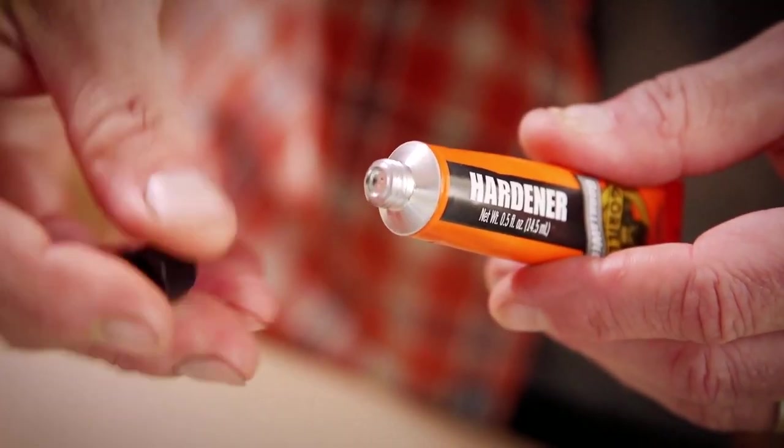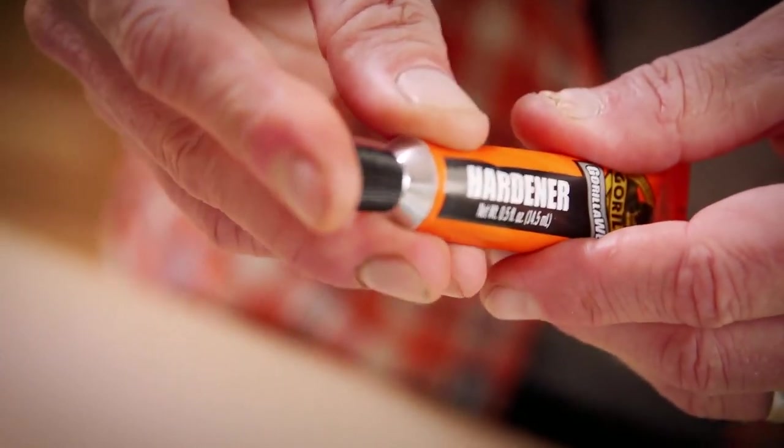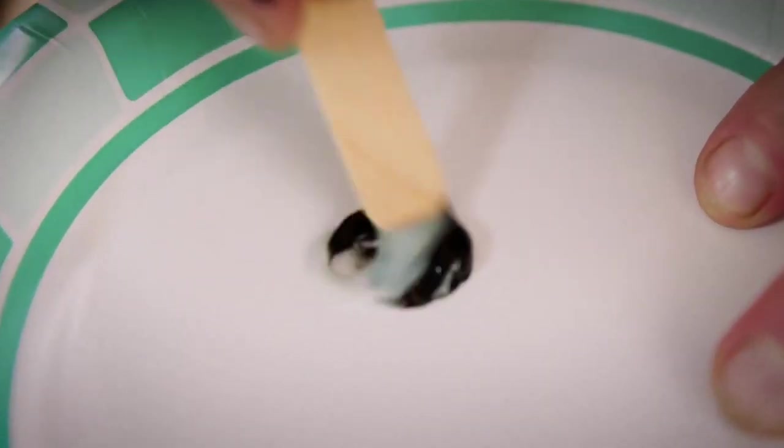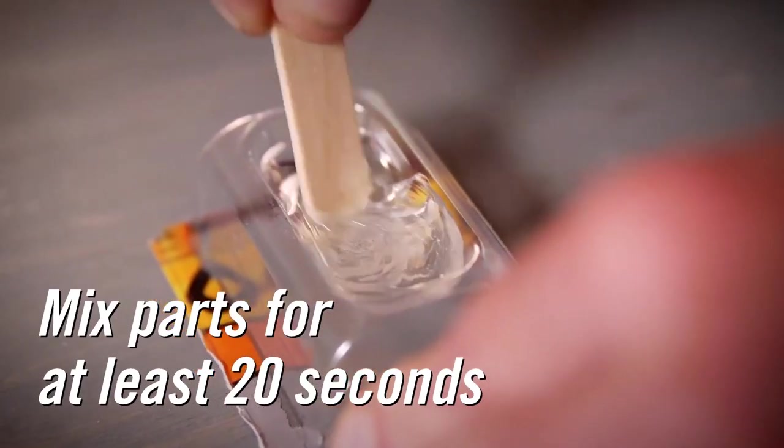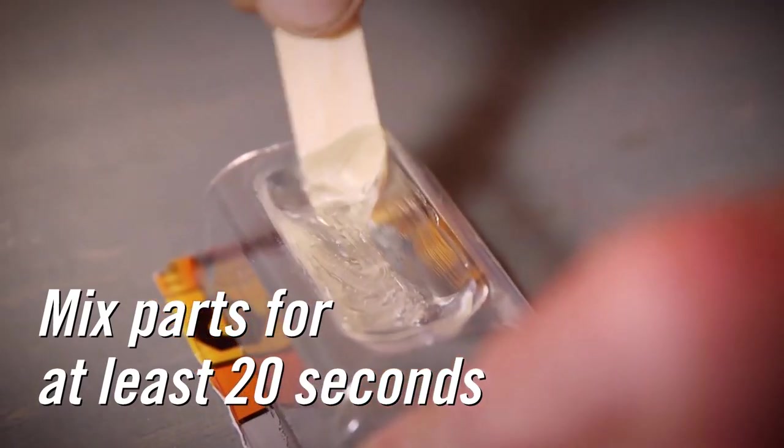For the tubes, use the cap to puncture the foil seal for first use. Next, using the wood stick provided or another mixing tool, mix the two parts for at least 20 seconds until they're completely combined.